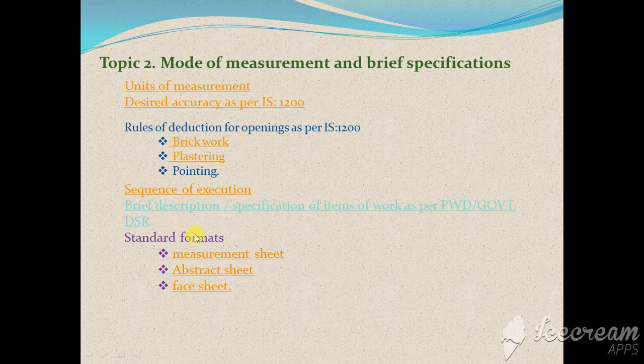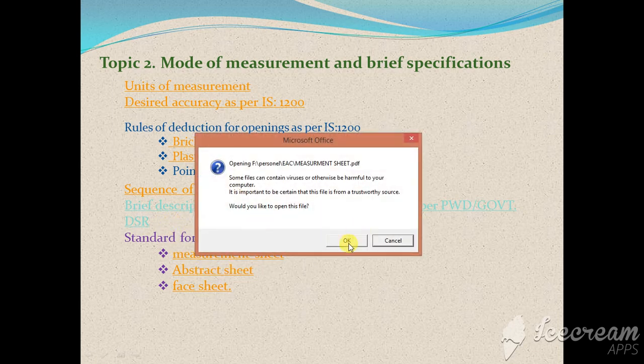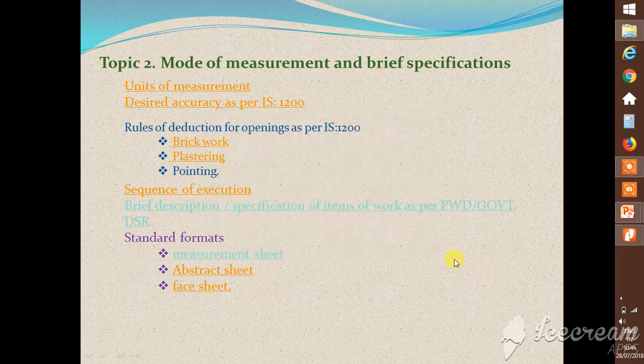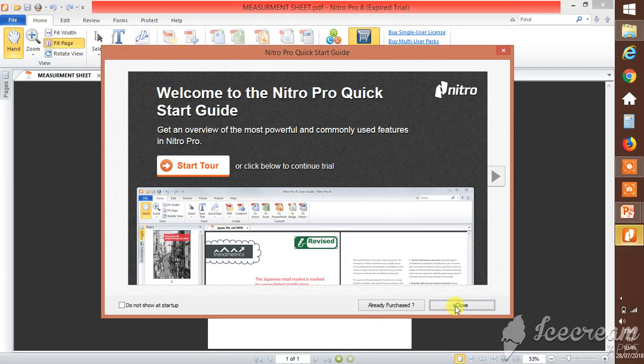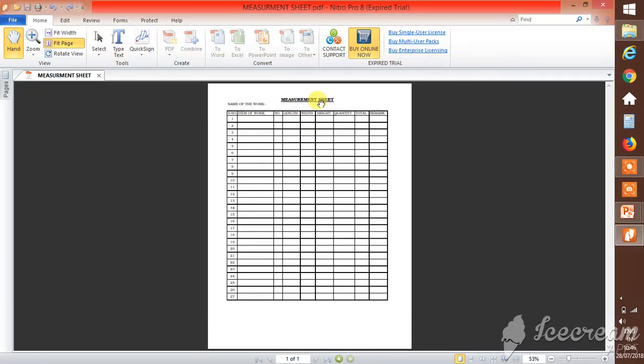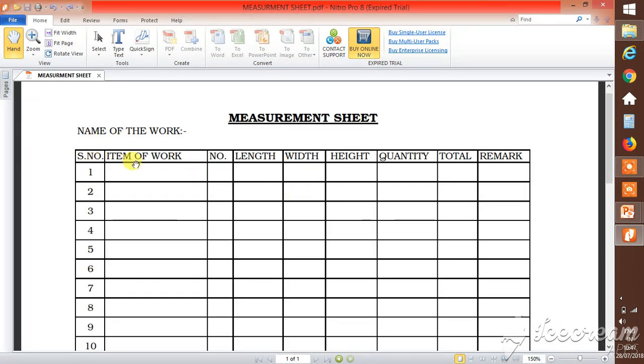Then there are these general formats which are being used for the calculations. This is what we are having: measurement sheet, in which we are having this kind of things - the serial number, name or item of work description number, length, width, height. The quantity is calculated by multiplying this for the columns.